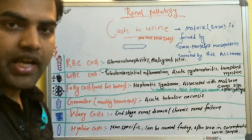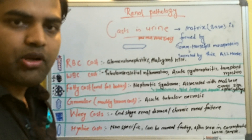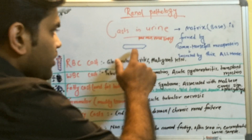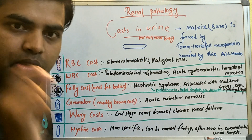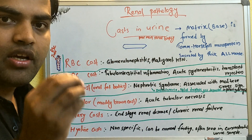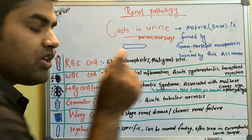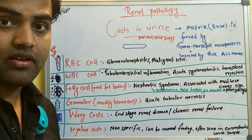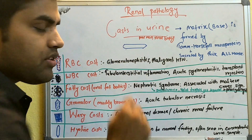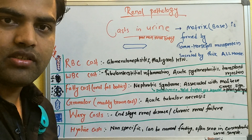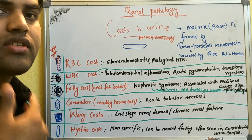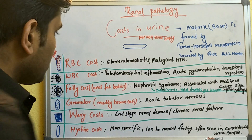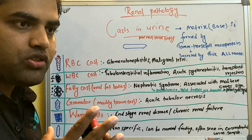Even a renal stone normally present in the calyces or pelvis of the ureter will cause hematuria, but will not form casts. Bladder stone, bladder cancer, cystitis — none of these form the tubular cast structure. So always remember: if a cast is found, it indicates something is wrong with the renal tubule and kidney only. This makes casts a very good indicator of renal disease, and in USMLE questions, finding a cast almost clinches the diagnosis.